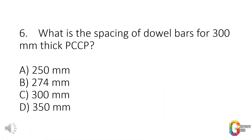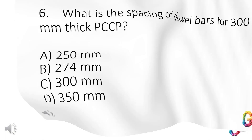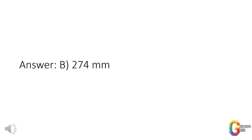Question 6. What is the spacing of dowel bars for 300 millimeters thick PCCP? a. 250 millimeters. b. 274 millimeters. c. 300 millimeters. d. 350 millimeters. Answer: b. 274 millimeters.